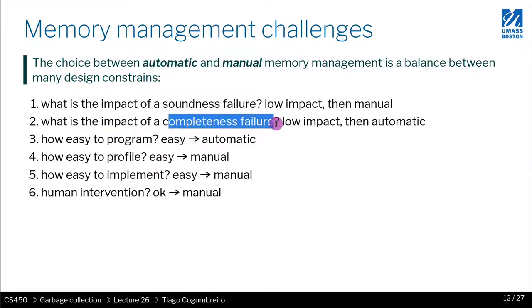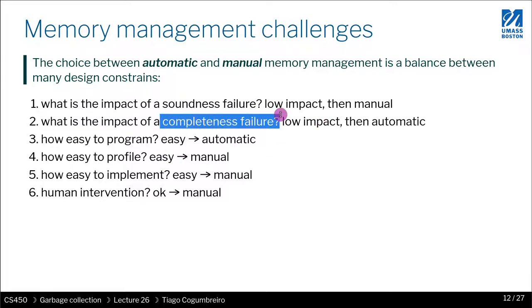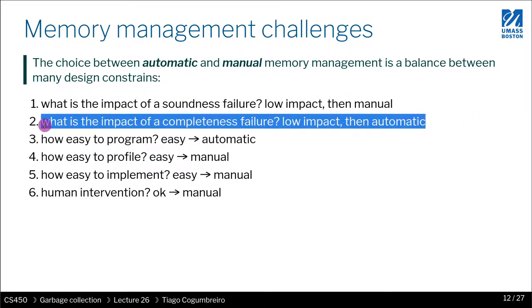What about completeness? A completeness failure happens if, for instance, your memory management never reclaims its memory. If it never reclaims its memory, you have a completeness problem. But if you have a lot of memory, that is not a problem — the impact of that is low, and therefore choosing automatic memory management is quite good.